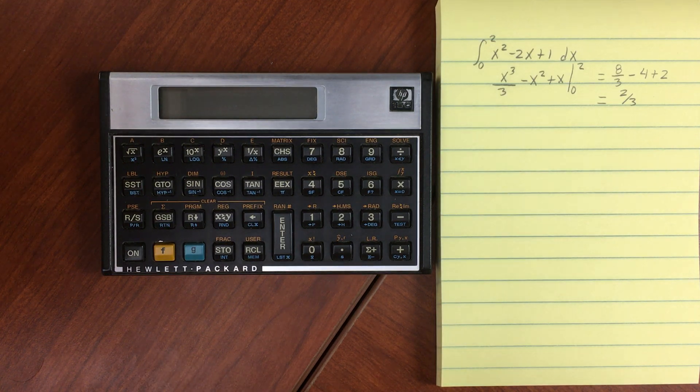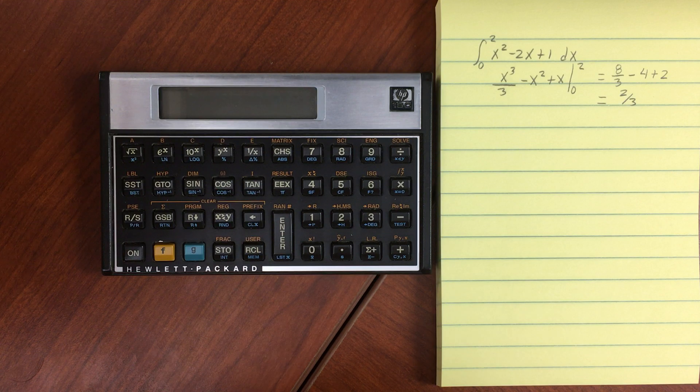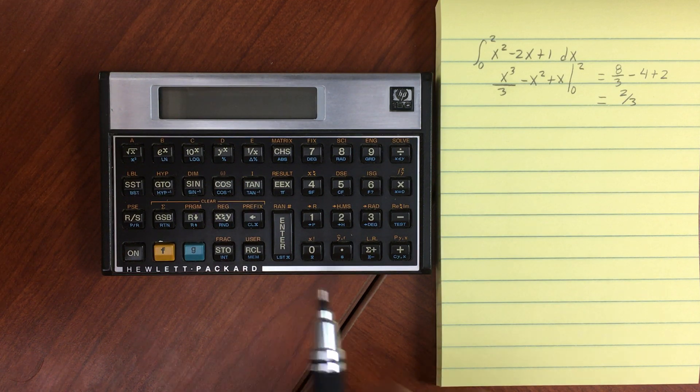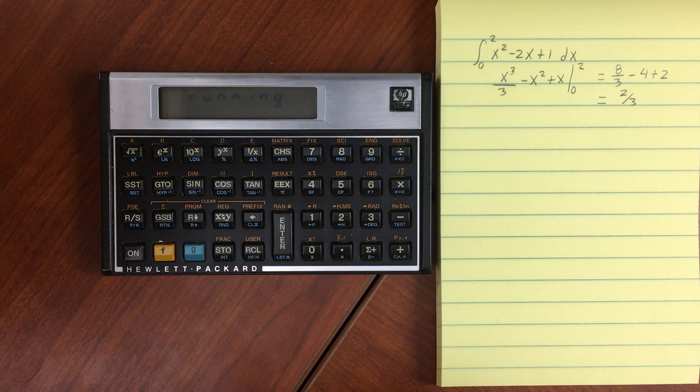That's where our subroutine is. Now the accuracy of this will depend on the number of digits that you have displayed on your calculator. I have fixed two right now. If I had fixed one, it would execute faster but not be as accurate. If I had fixed five, it would be more accurate but it would take much longer to run.